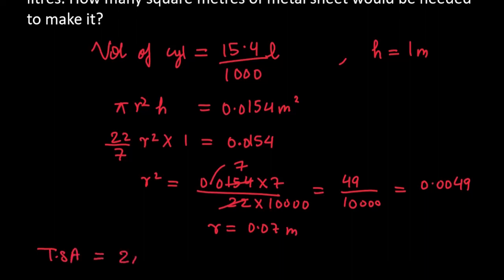It is 2πr(r + h). Value place 2 into 22 by 7. r ki value kitna is 0.07. And r again is 0.07 plus 1.